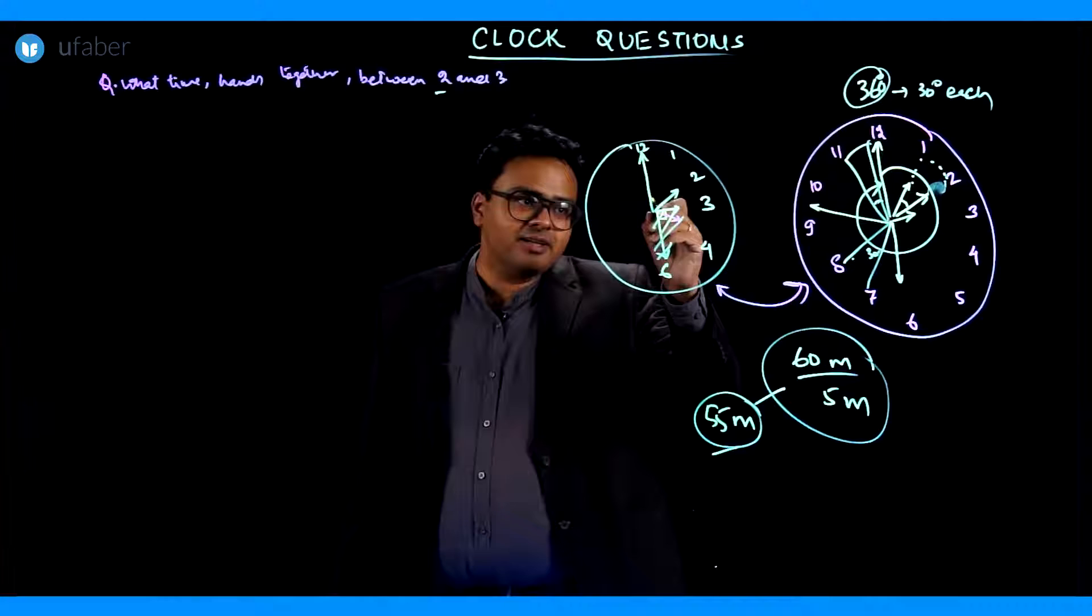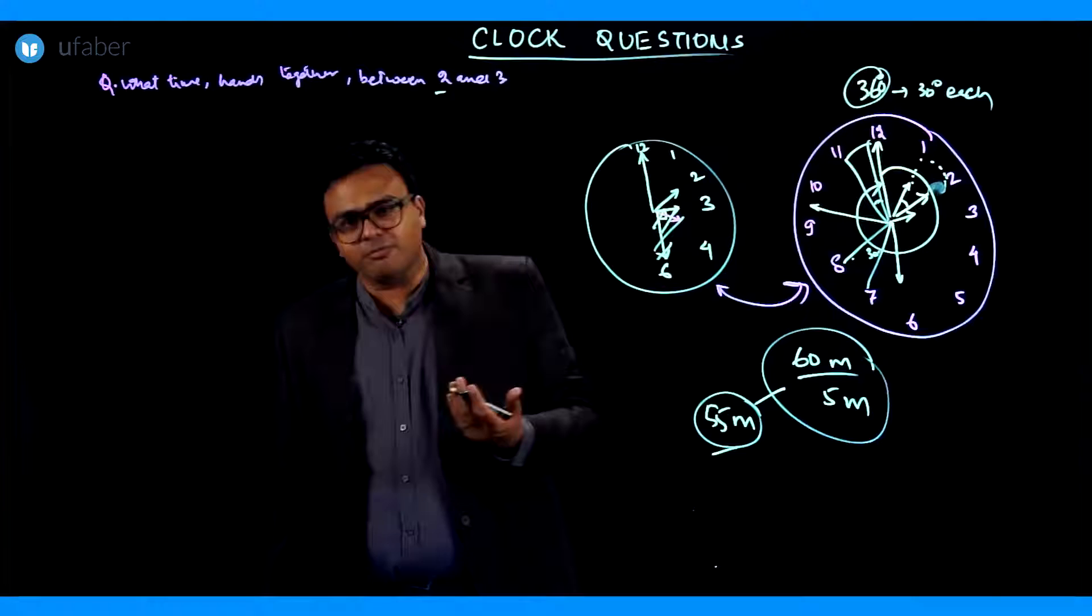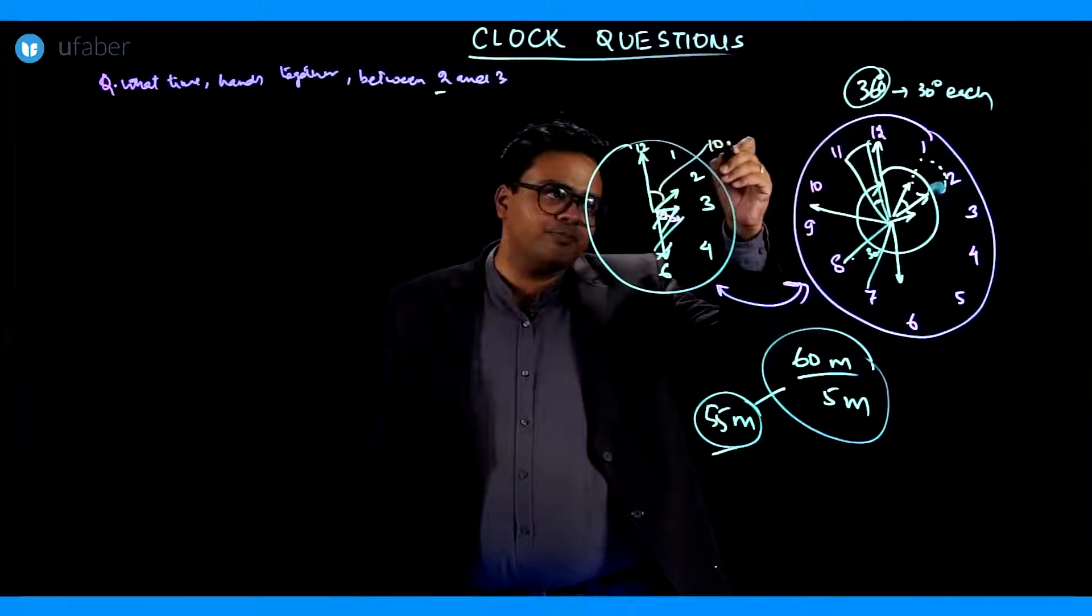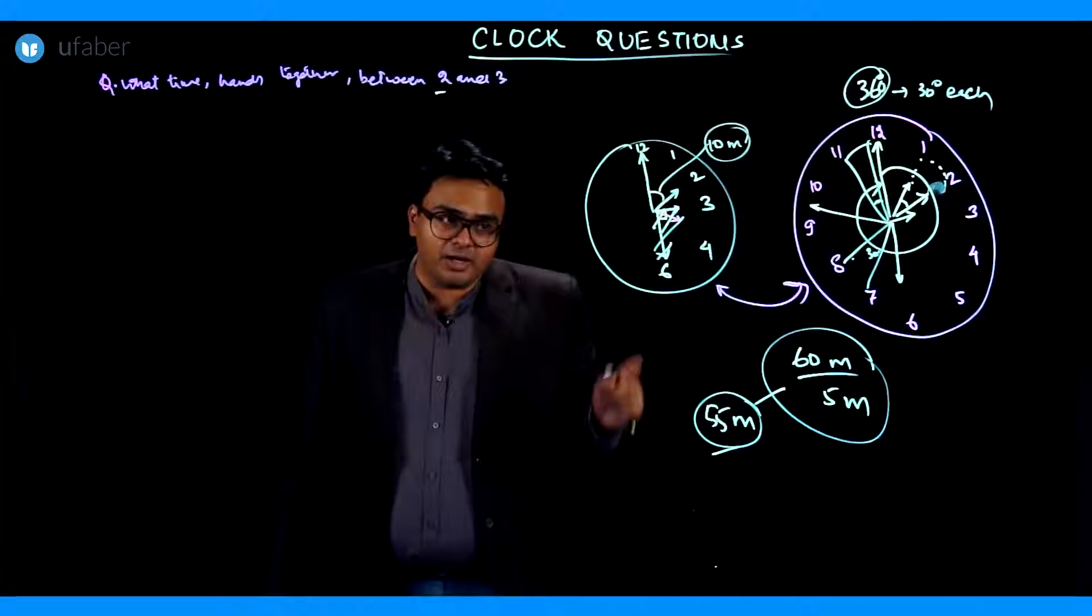Now let us see in 60 minutes. To begin with, they are how far away? You can do this in terms of angle as well, or you can do this in terms of minutes. Since minutes calculation is slightly easier, we are doing it in terms of minutes. So they are how far away? They are 10 minutes away.